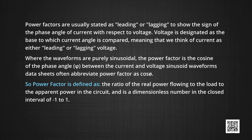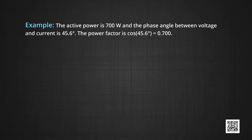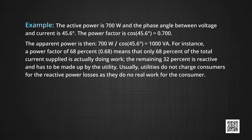Power factor is defined as the ratio of real power flowing to the load to the apparent power in the circuit, and is a dimensionless number in the closed interval between −1 and +1. For example, if active power is 700 W and the phase angle between voltage and current is 45.6°, then the power factor is cos(45.6°) ≈ 0.700. Therefore, the apparent power is 700 W / cos(45.6°) ≈ 1000 VA.